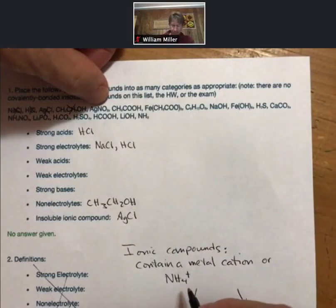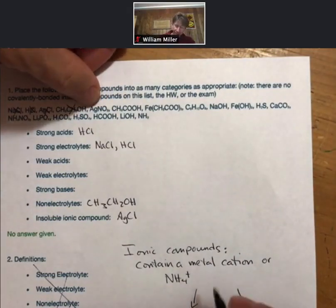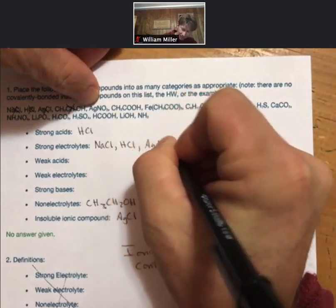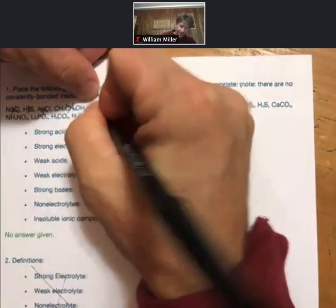Silver nitrate. All nitrates are soluble. It has a metal in it, that means it will be a strong electrolyte.